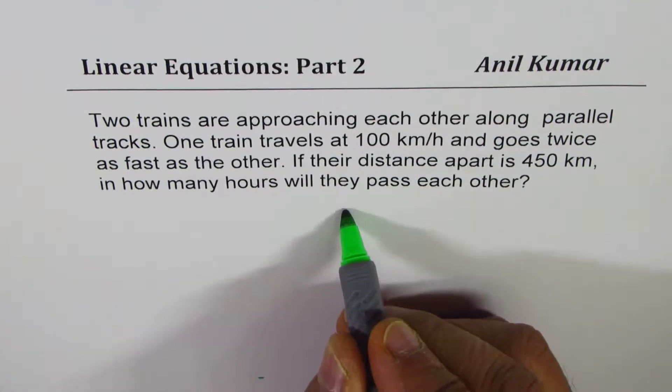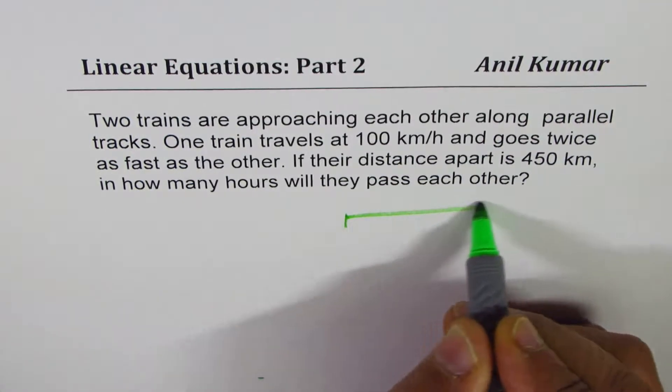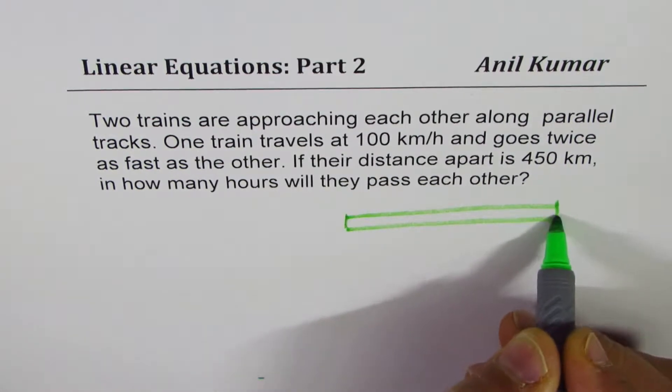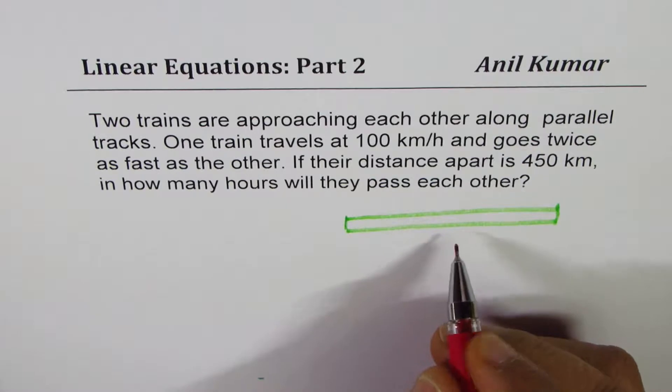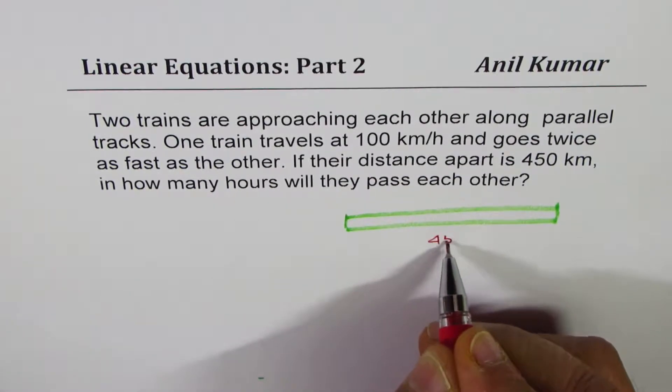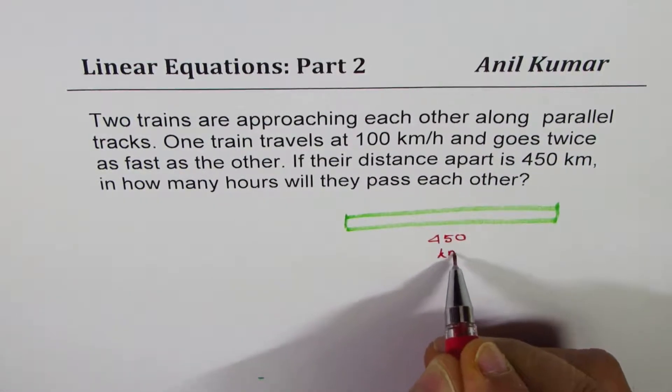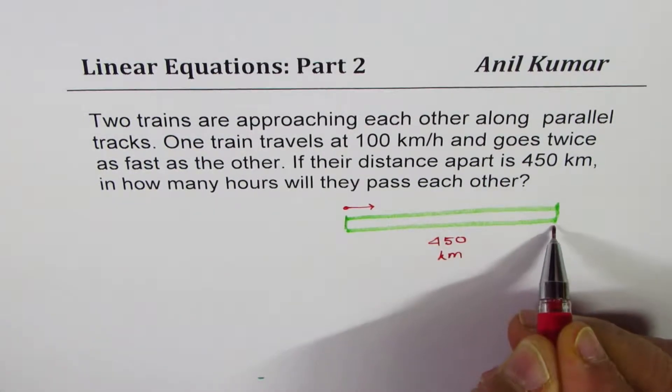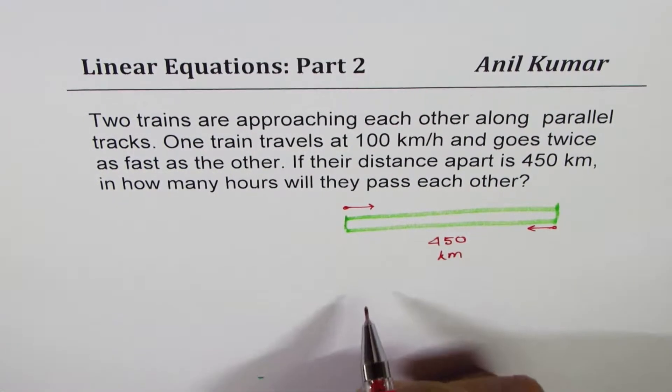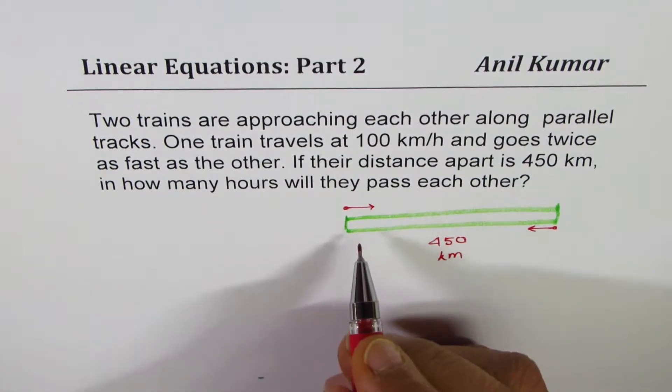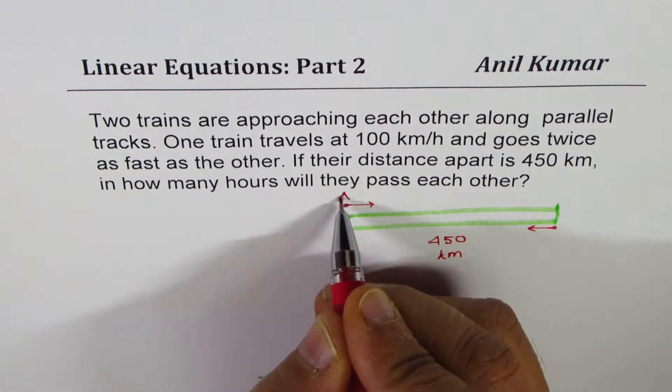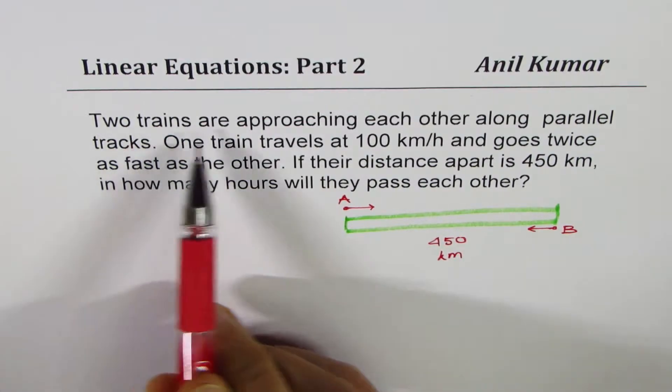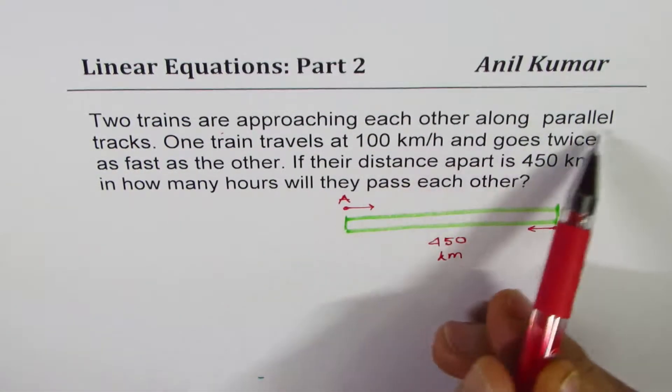So the situation here is that there are two trains travelling in parallel tracks. These are the parallel tracks and the distance between them is 450 km. One is travelling this direction, the other one in that. So let's call these trains as train A and B.